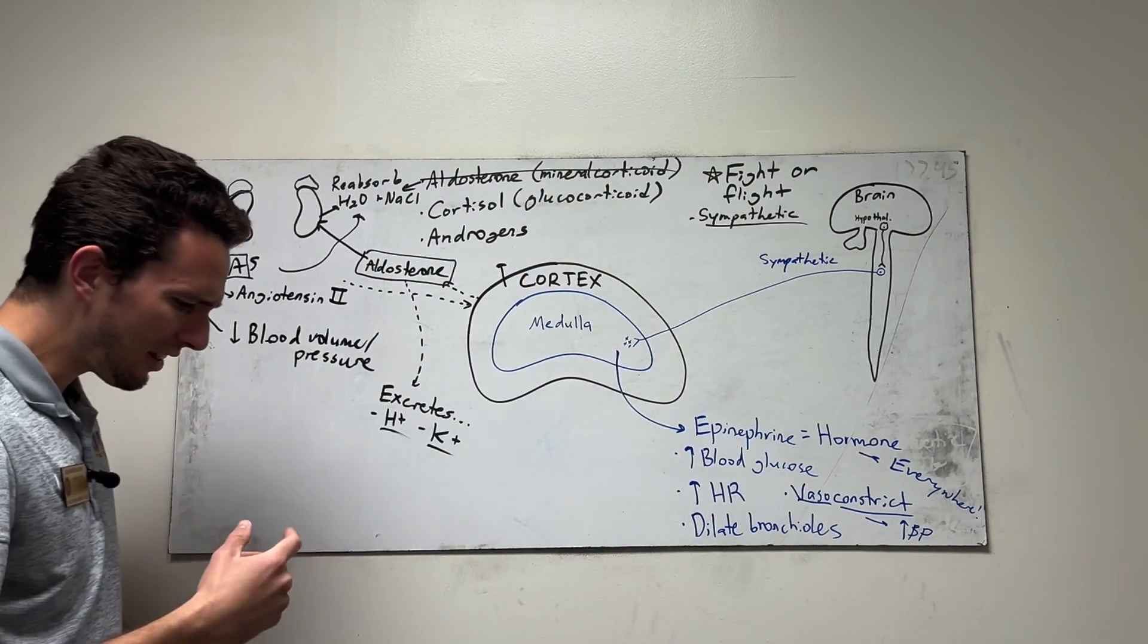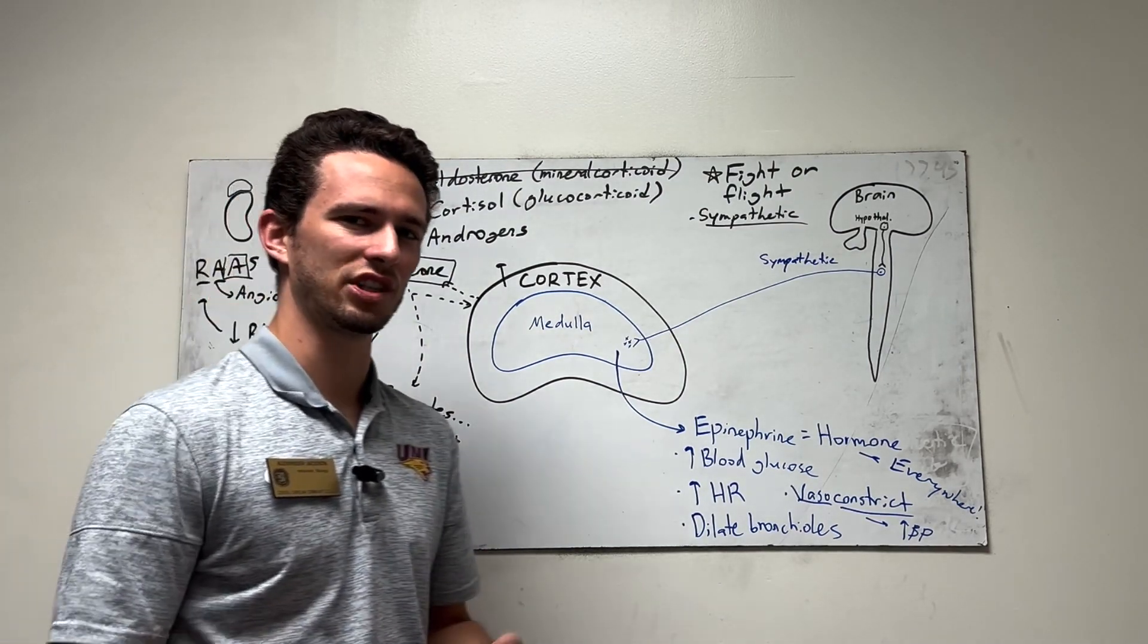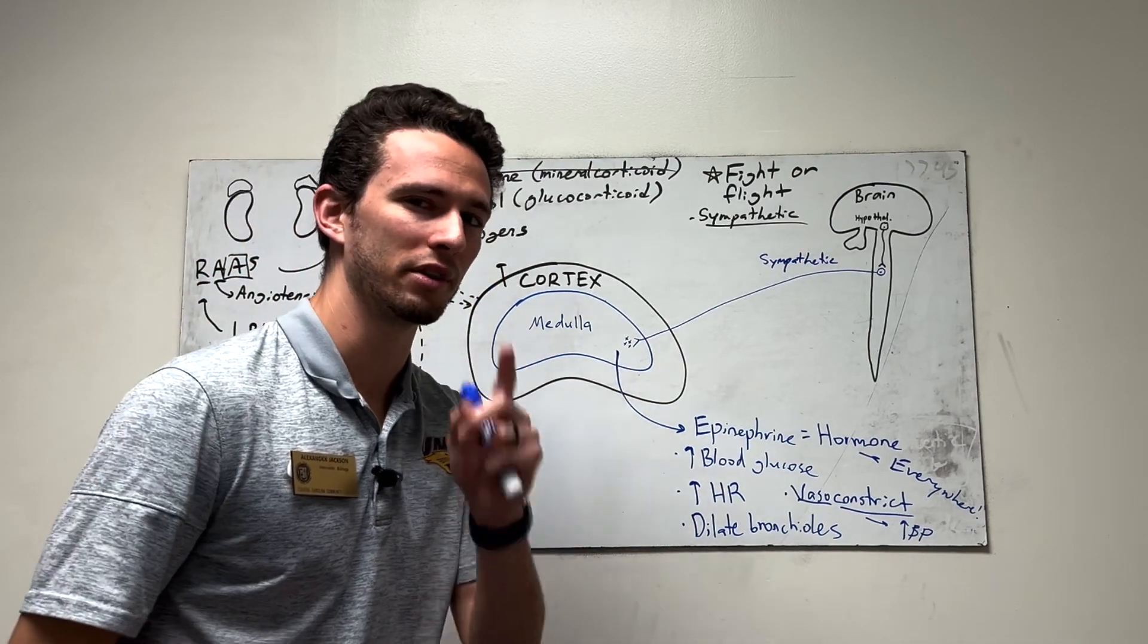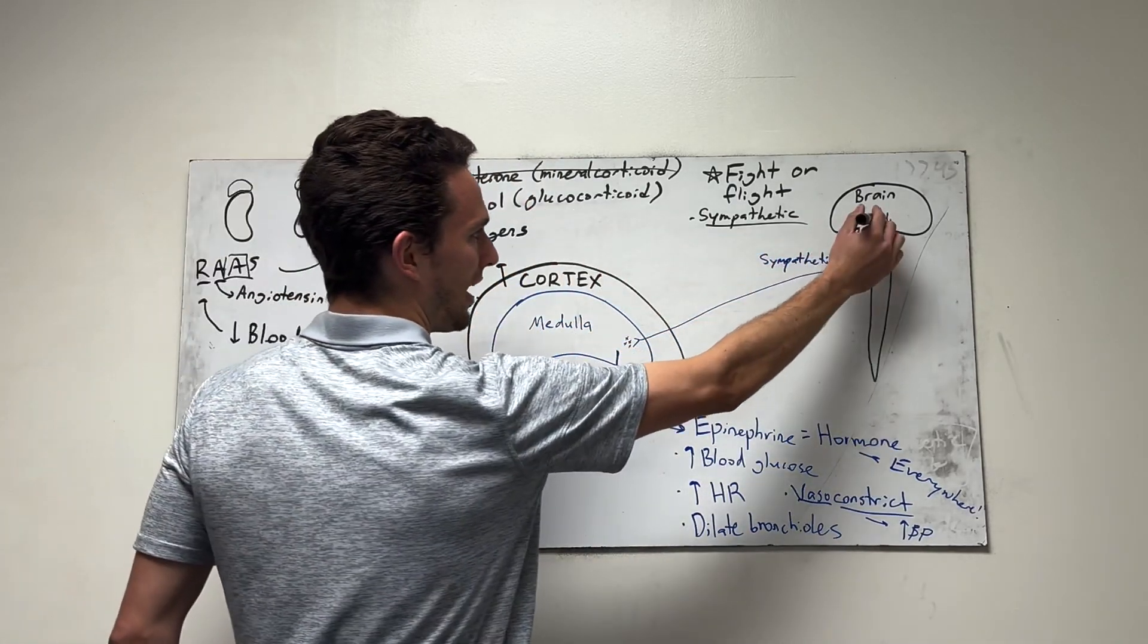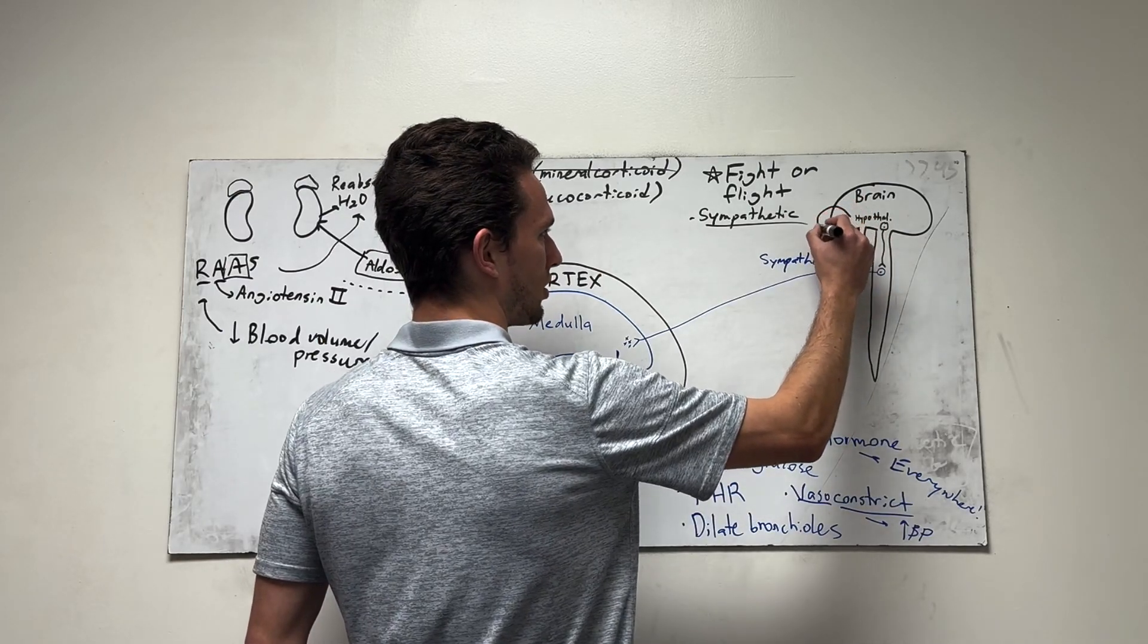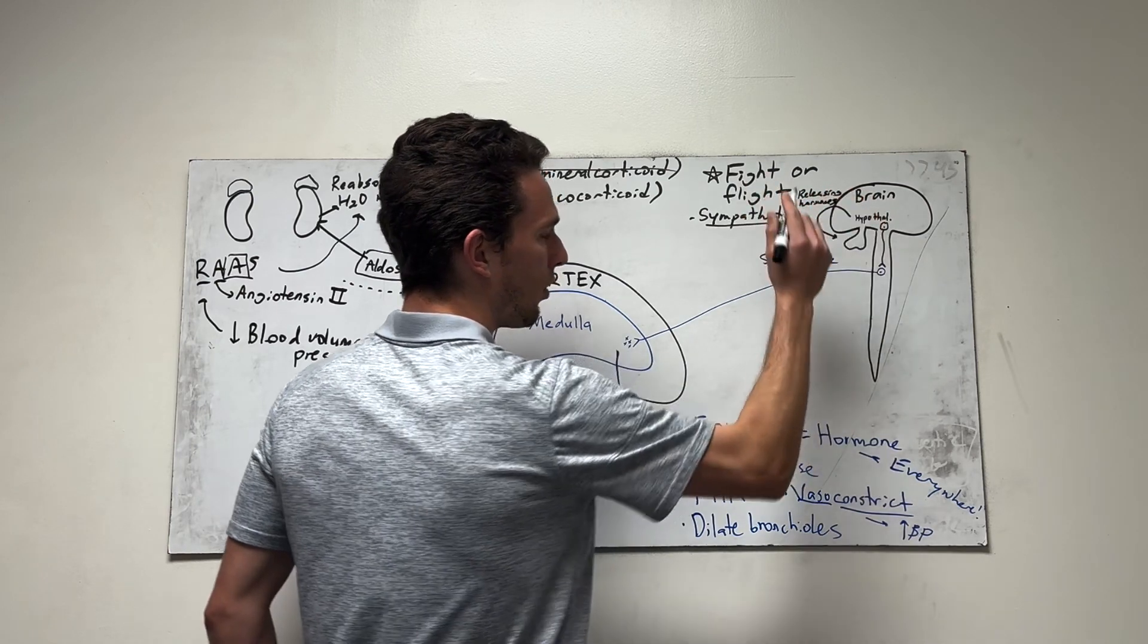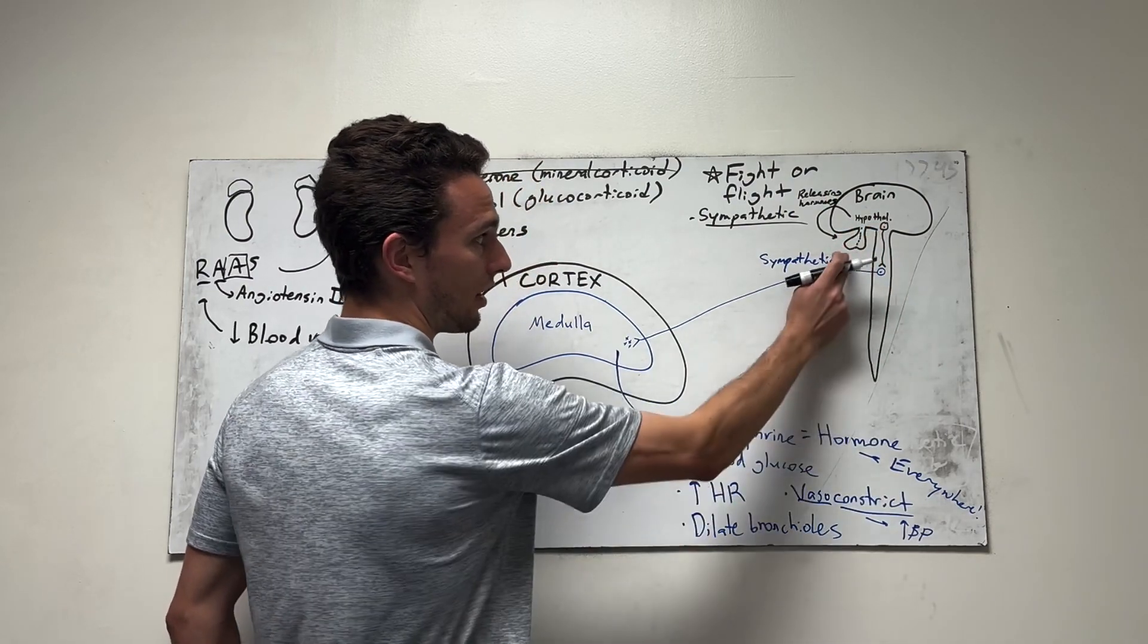Now cortisol, cortisol, this is sort of your stress hormone, but it's actually secreted pretty chronically. So you actually have cortisol in your system all the time, because it helps you basically stay alive and be regulated specifically with blood sugar. Now, let me talk about that a little bit. So first off in the hypothalamus, we know that the hypothalamus releases things called releasing hormones, releasing hormones that will talk specifically to the anterior portion of the pituitary gland right there.